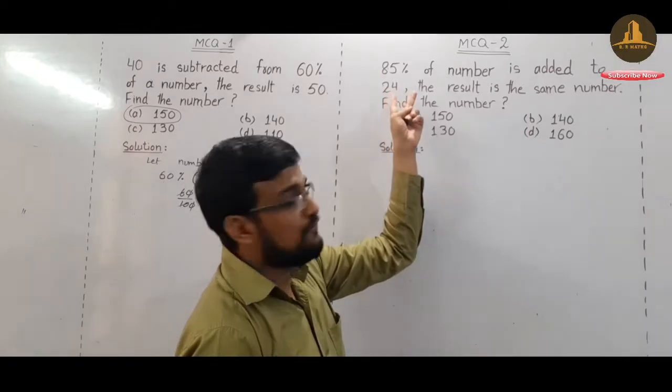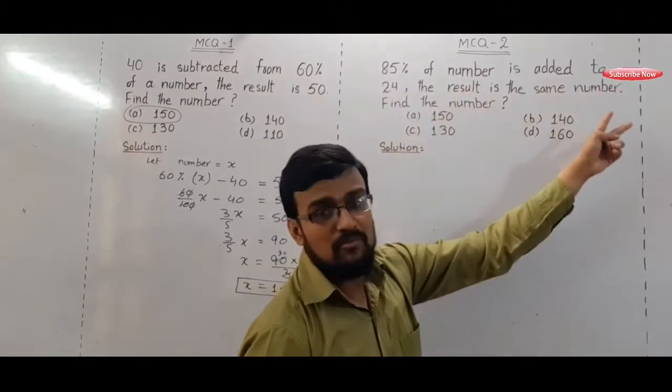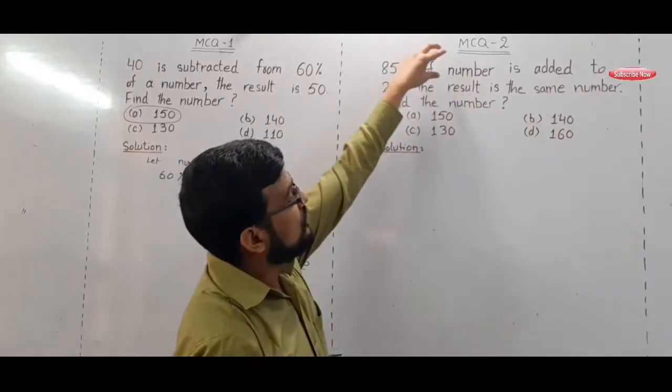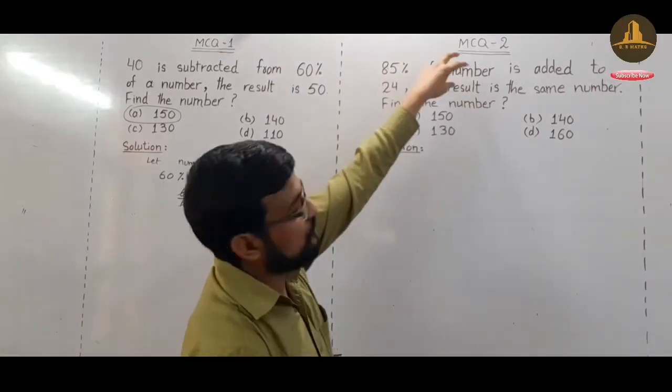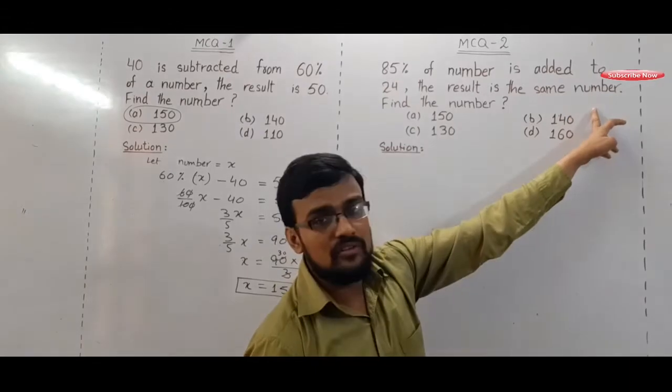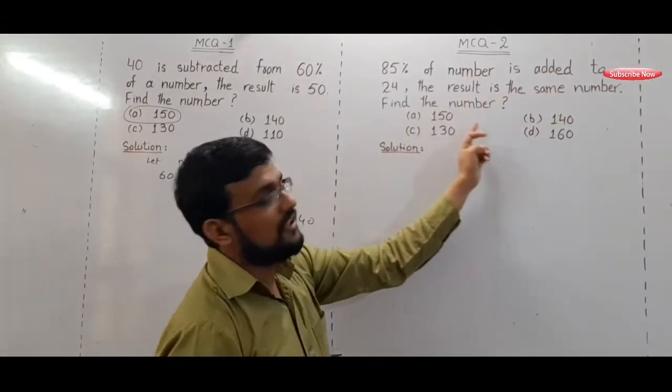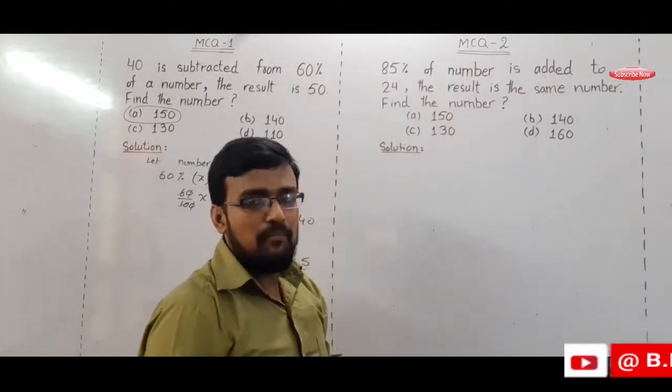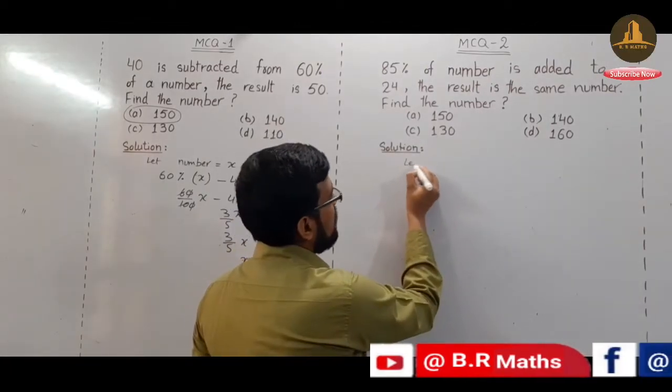to 24 and the result is the same number. It means the result is also the same number. So find the number. Again same process students, let the number be X.